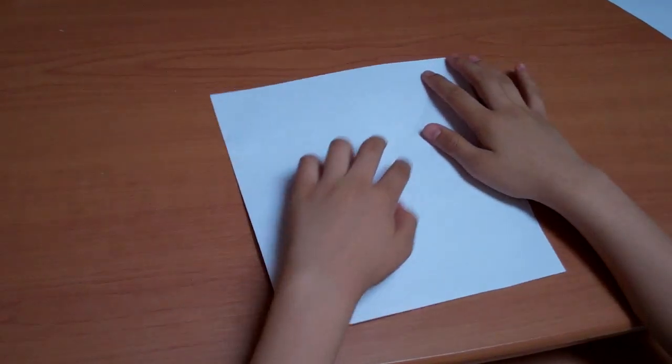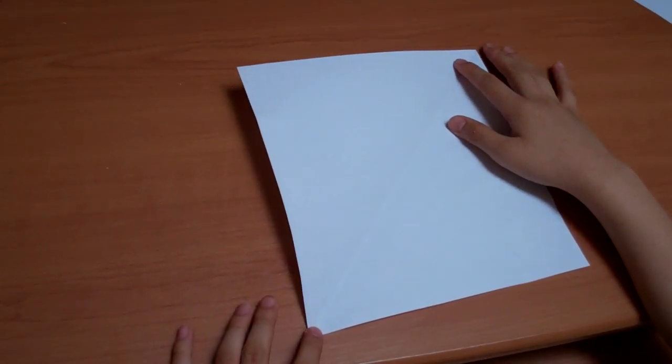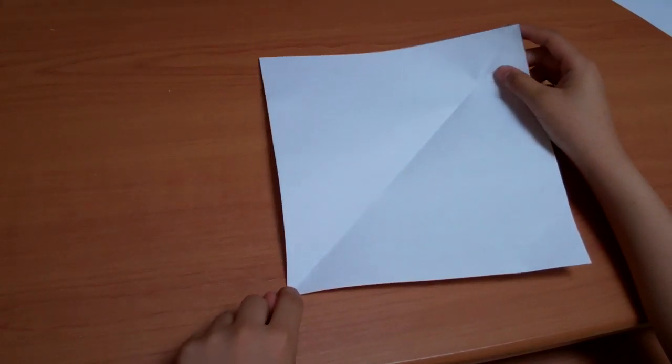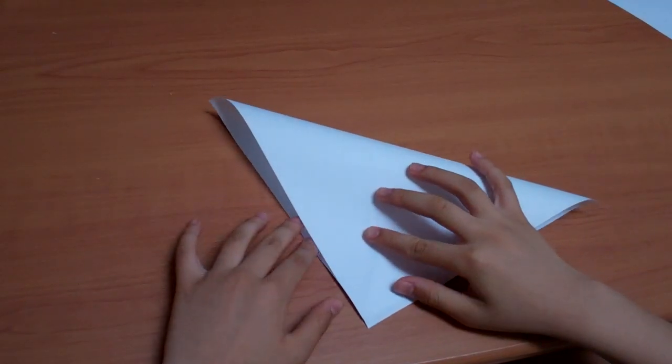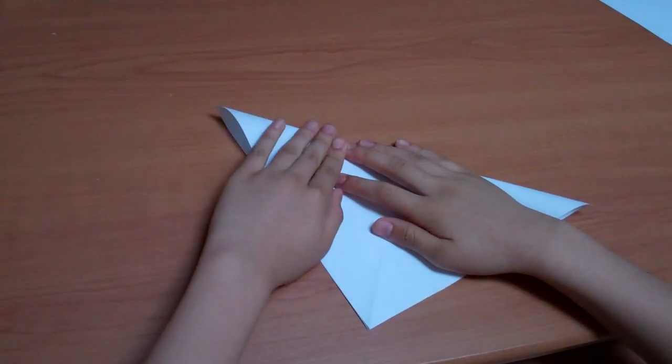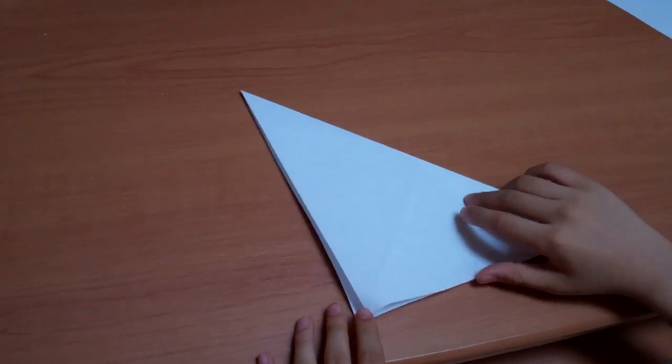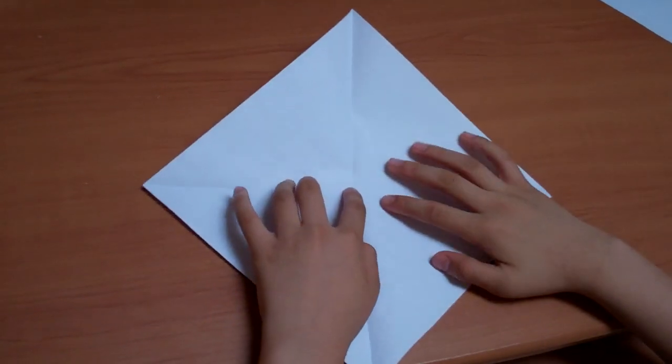Now you open it up you see there's a diagonal fold in it. What you want to do is take the other corner and meet up with this one. And then crease. Then you open it up. Now you see there's an X.